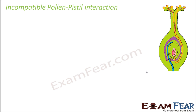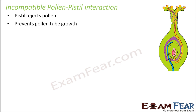What if the pollen-pistil interaction is not compatible? In that case the pistil will reject the pollen. As soon as the pollen arrives, the pistil rejects it, so pollen tube formation will not take place at all — the pollen grains will not be able to germinate on the stigma. If the pollen tube is not formed, the pollen grains will not be carried forward, they will not reach the ovary, and the male and female gametes will not meet. So there will be no fusion and hence no fertilization. That is the incompatible scenario.